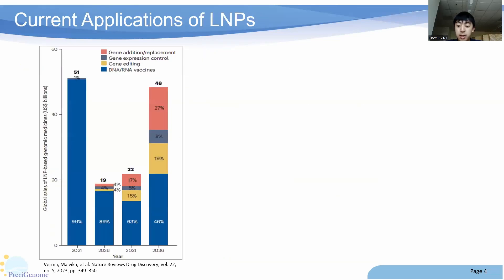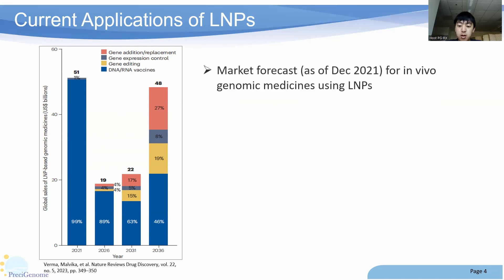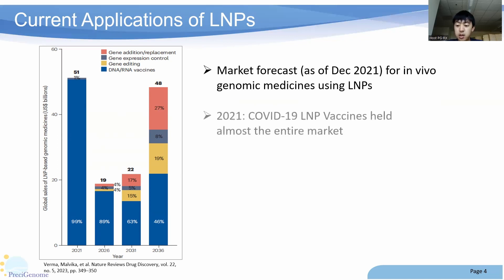Now moving on to current applications and market forecasts for LNPs. From the graph on the left, you can see the global sales of LNP-based genomic medicines for 2021, as well as the projected sales for the next 15 years. In 2021, there were approximately $51 billion in sales, with 99% of those sales being from DNA-RNA vaccines. This is expected due to the COVID-19 pandemic and how these vaccines were among the only FDA-approved LNP-based therapeutics at the time.